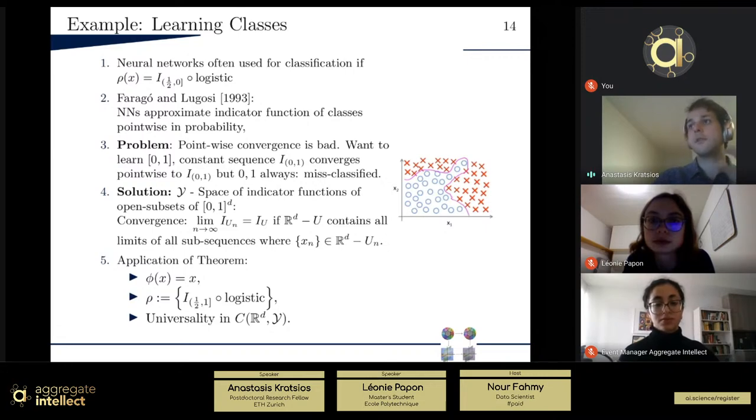basically what we wanted above. So, a sequence of indicators of open sets converges to another indicator of an open set, if you look at the complements, so the closed sets, if the closed set of the limit contains all of the limits of all possible sub-sequences. So, this seems really abstract, but for example, here, this constant sequence, we can understand it as converging, where the zero one in the open set converges, this constant sequence of sets converges to the closed set zero one,